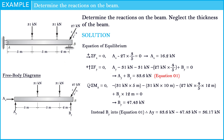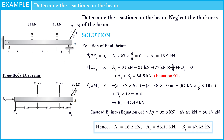Let's substitute the value of By into equation 1. We see the value of Ay is equal to 36.17 kN. Here is the way that we determine the reactions on the beam.